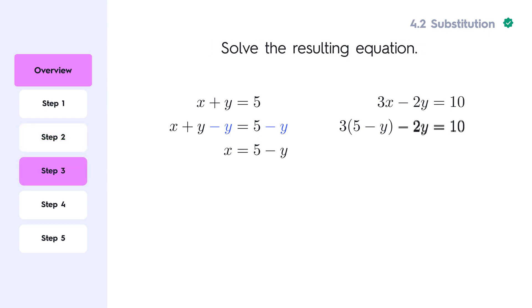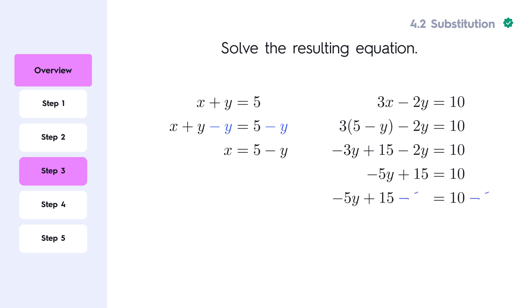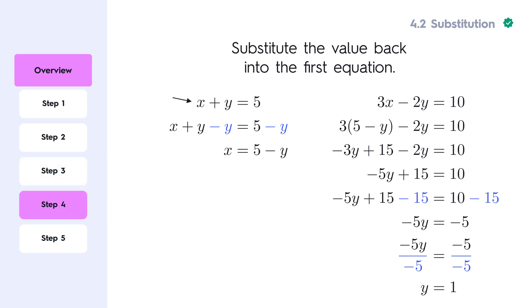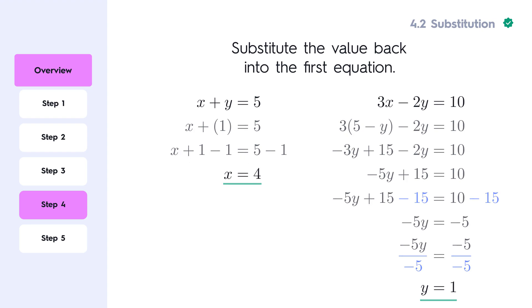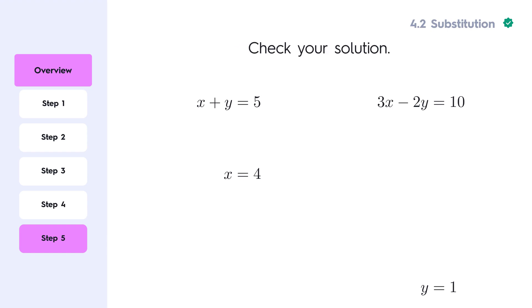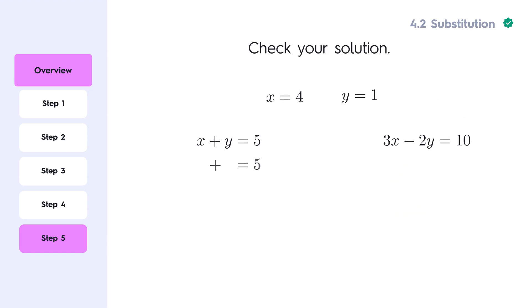After substitution, we can easily solve this one-variable equation. Now that we have the value of one variable, we substitute it back into the equation we solved in step one to find the value of the other variable. Finally, it's always a good idea to check your solution by plugging both values into the original system of equations. This will verify that they satisfy both equations.